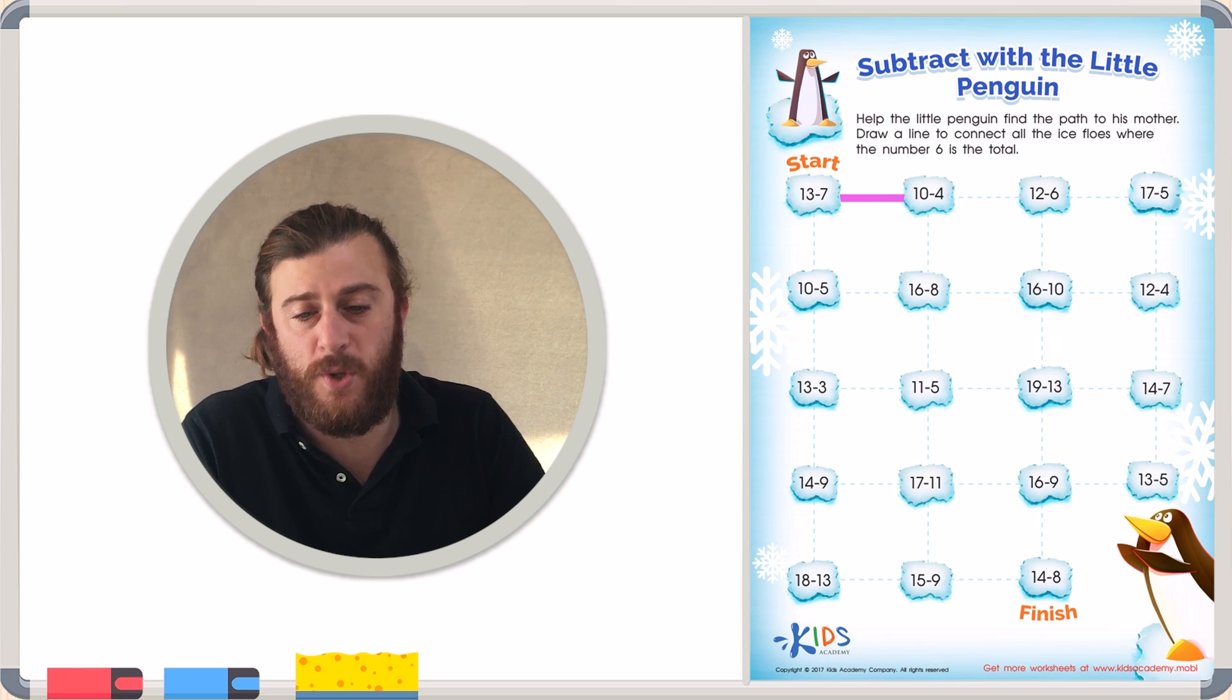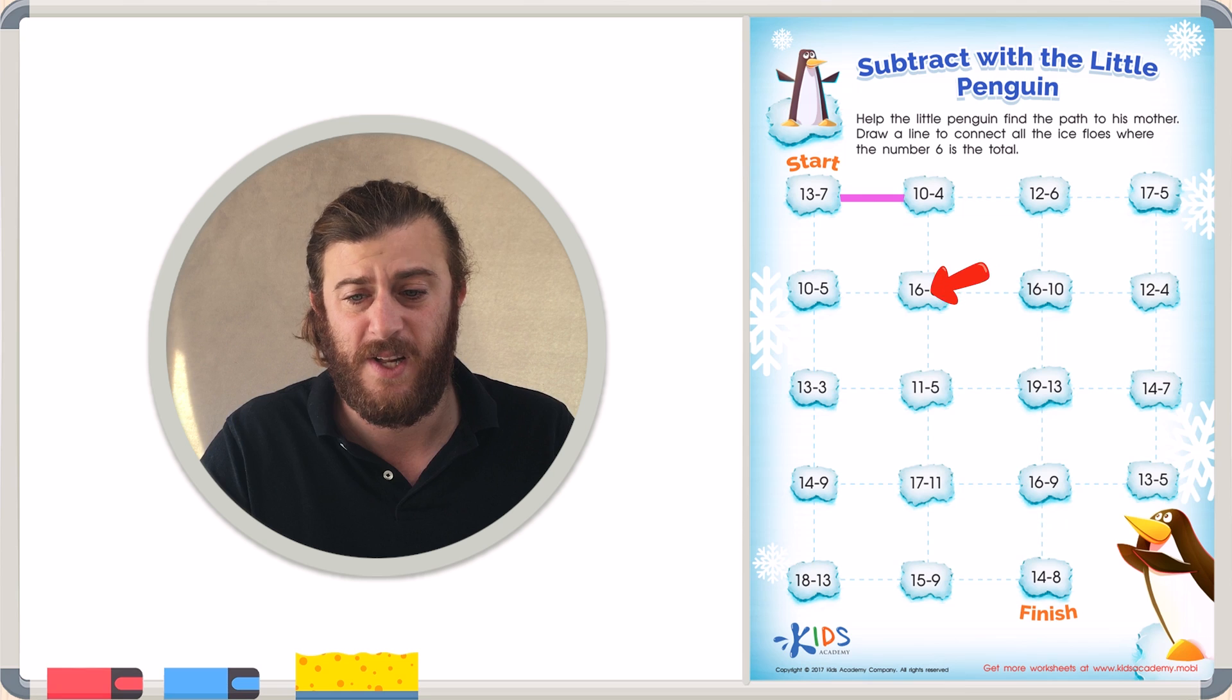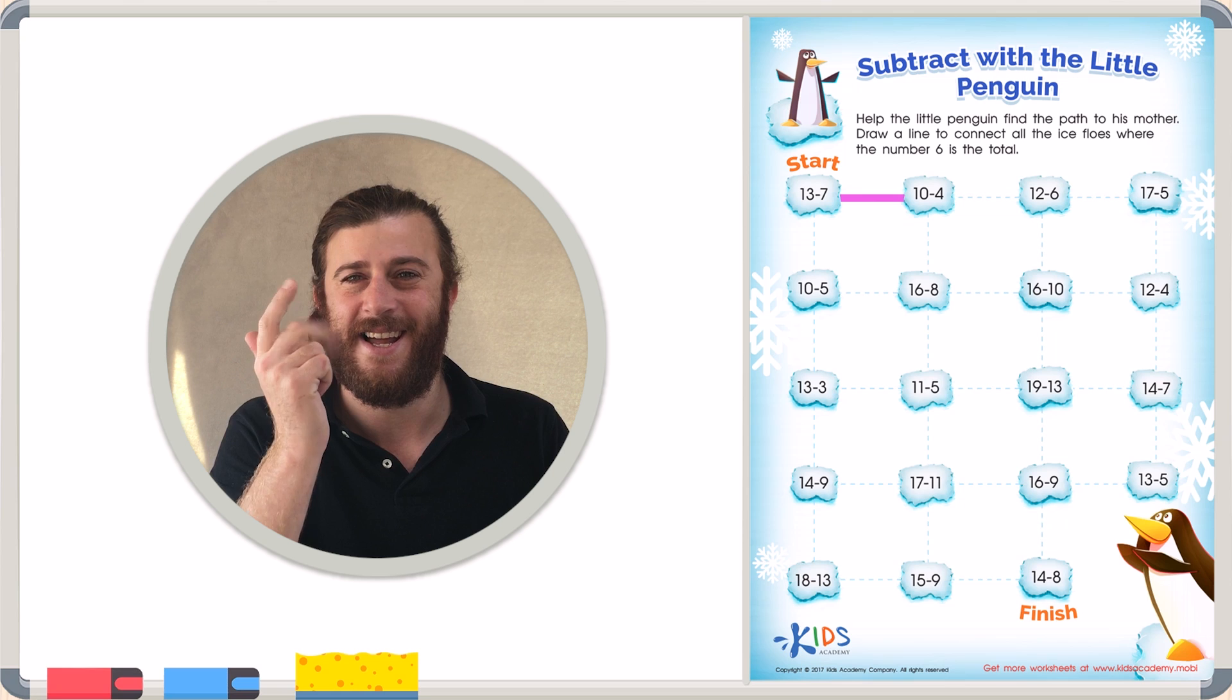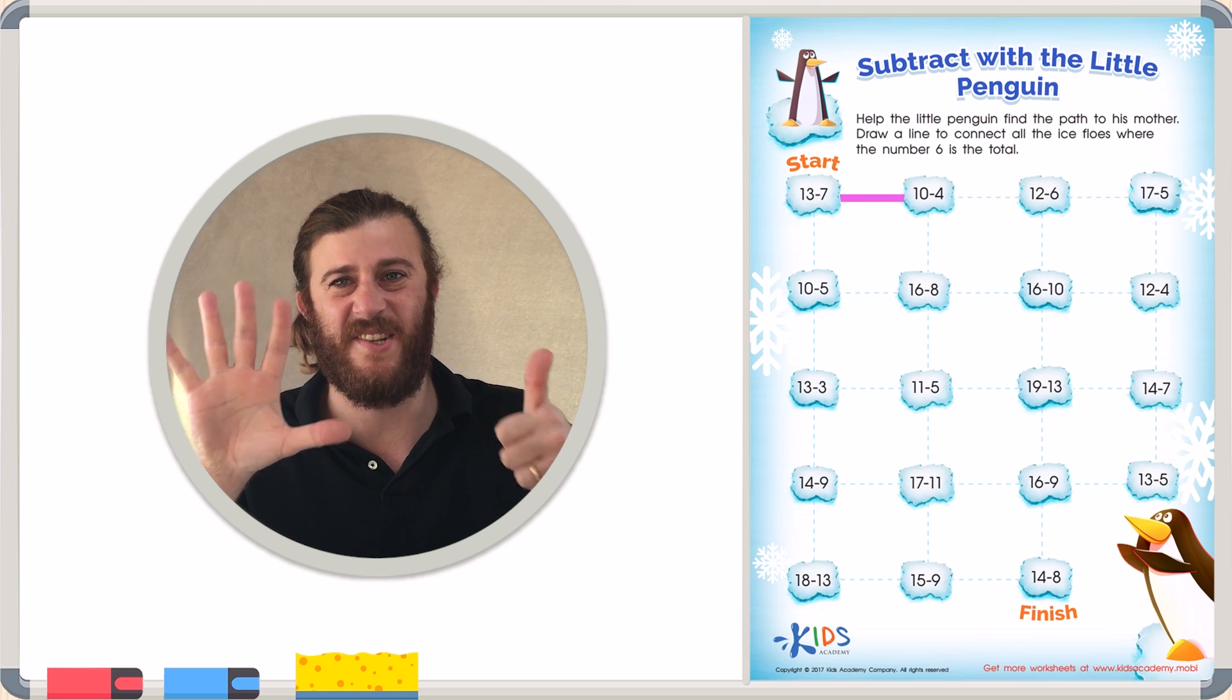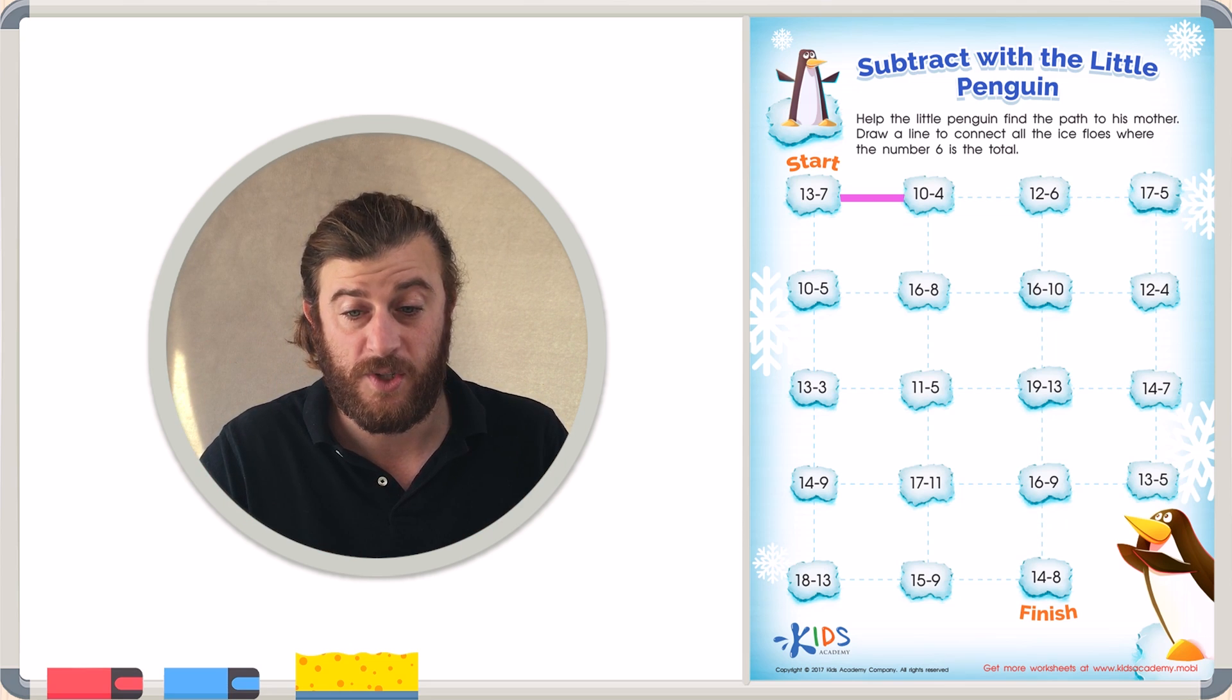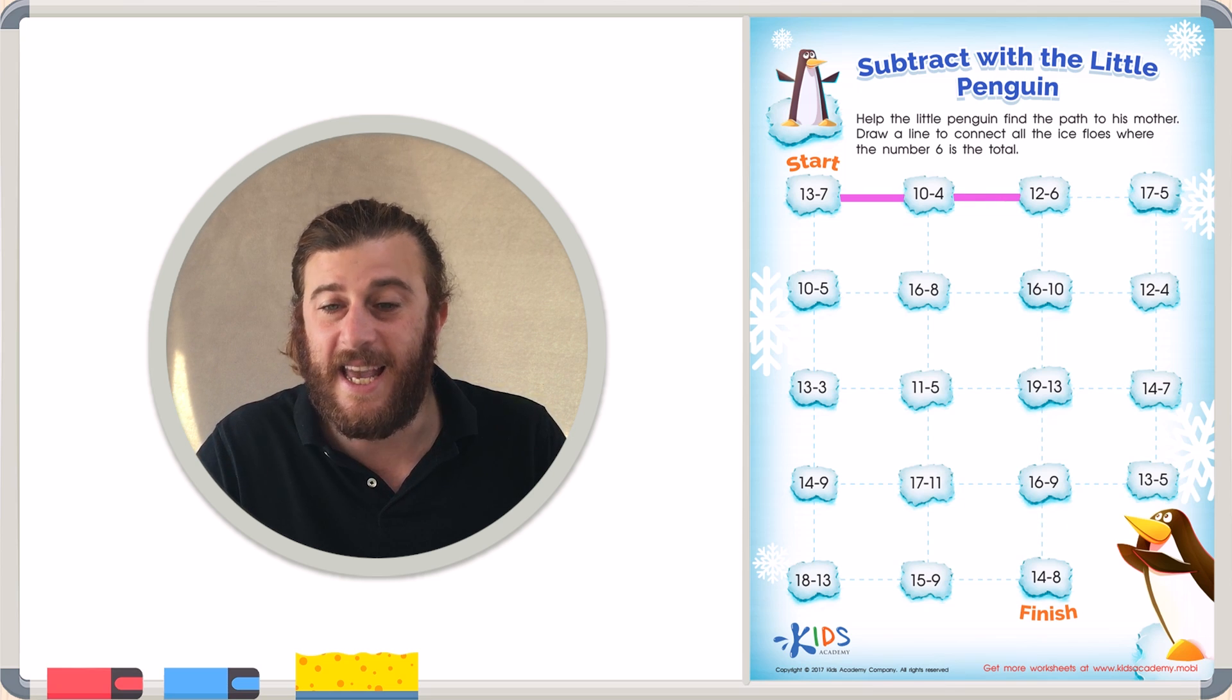So now from 10 minus 4, I have two choices. I can draw a line to 12 minus 6, or I can draw a line to 16 minus 8. Let's try 12 minus 6 first. 12, 11, 10, 9, 8, 7, 6. I landed on 6 and I have 6 fingers up. Counting backwards is a good strategy to make this subtraction go a lot faster. So let's draw a line from 10 minus 4 to 12 minus 6.